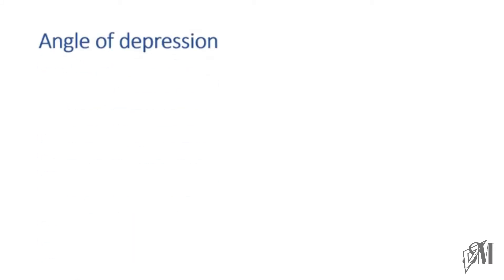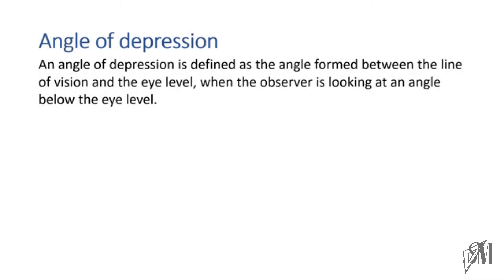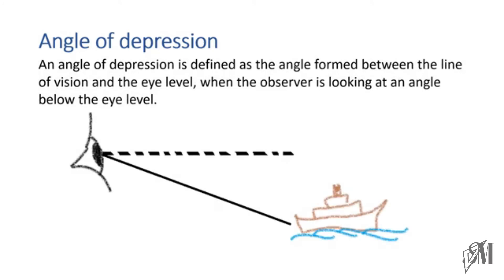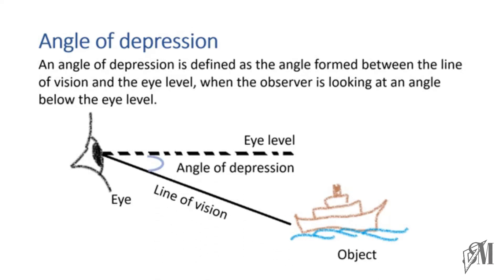Now let us move on to the angle of depression. If angle of elevation is something above the eye level, remember angle of depression is something below the eye level. This diagram shows how the angle of depression forms when you see something below the eye level. You have to remember what is angle of elevation and what is angle of depression to work out sums in this section.